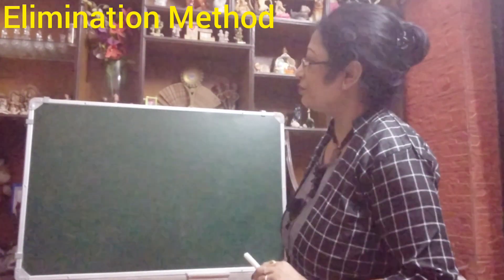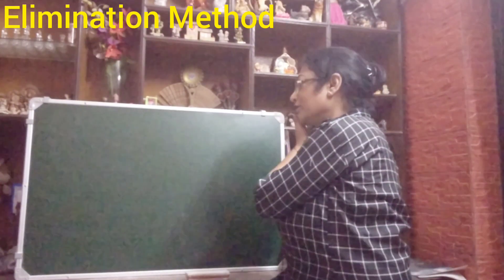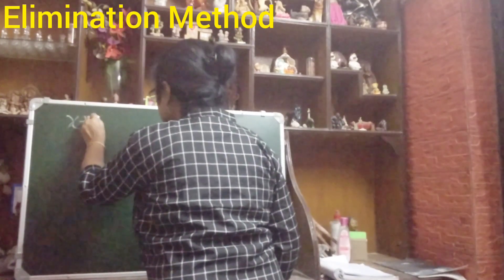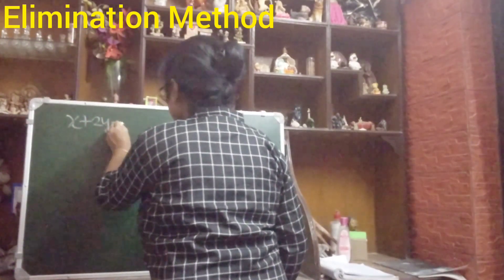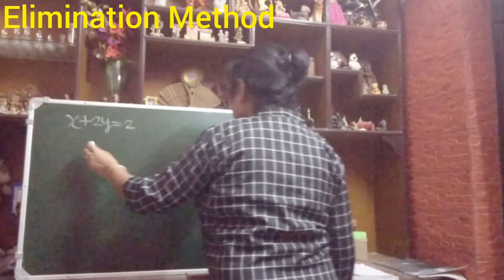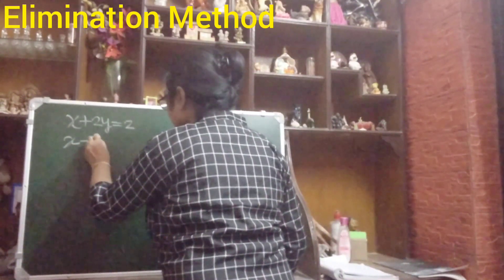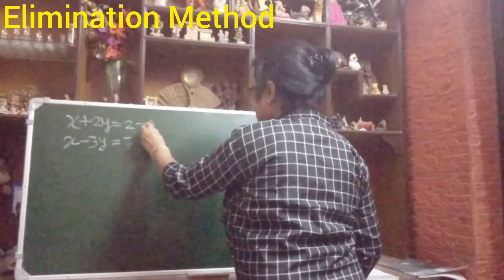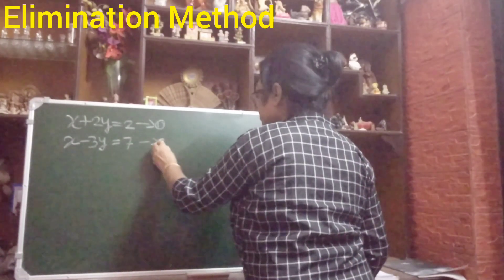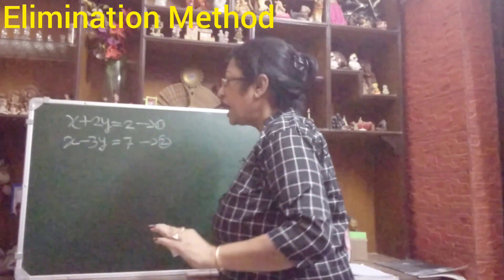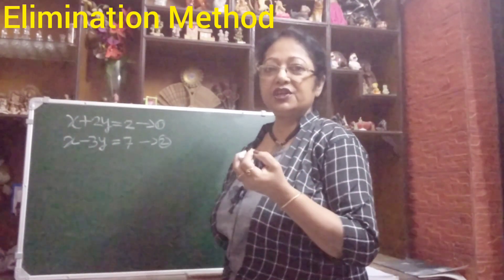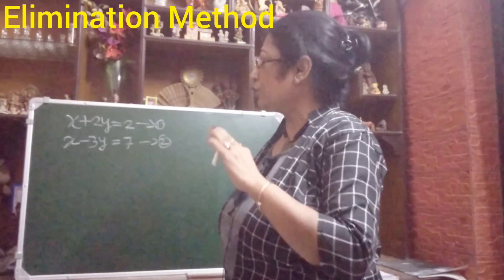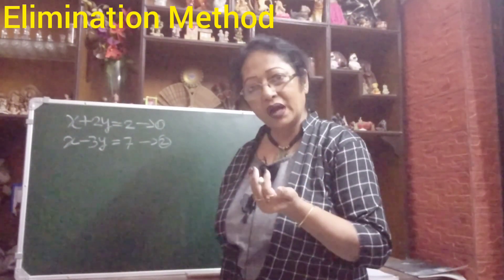Let us start the elimination method. Using the elimination method, we will solve the pair of linear equations. The first example I am taking is x plus 2y equals to 2, and another one x minus 3y equals to 7. These are equation number 1 and equation number 2. By the name you can understand — elimination method means you have to eliminate something. So first, we will eliminate one variable out of the two variables we have.